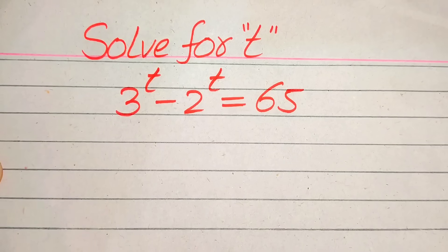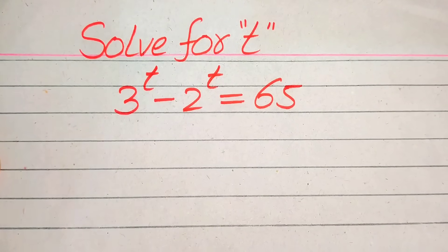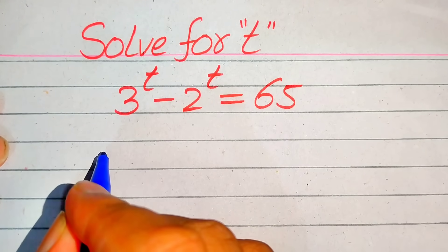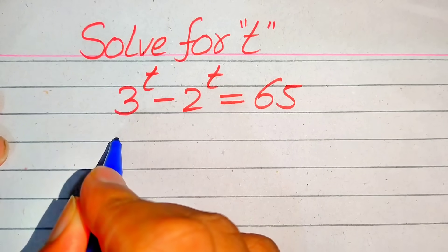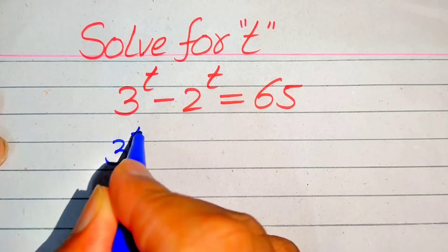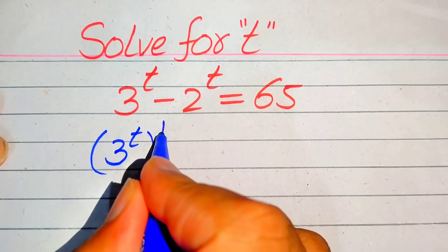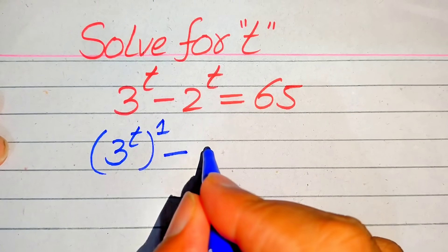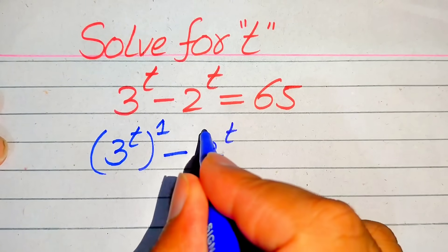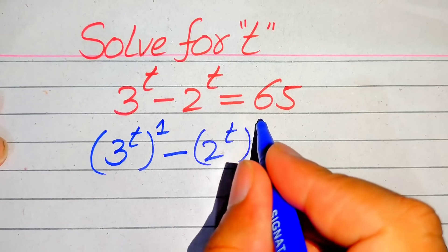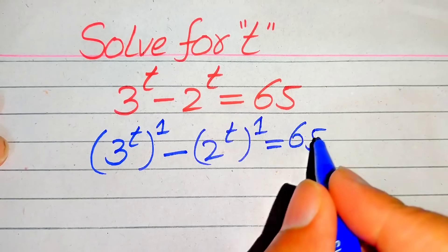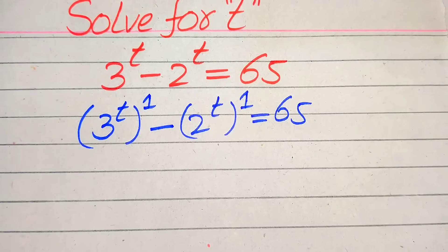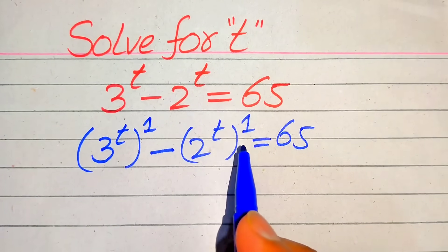Here the very first step we are going to do is focus on the exponents of both of these terms. We write it as 3 to the power of t and its whole exponent is 1, written in this form, minus 2 to the power of t, and again we write its exponent is 1, equals 65.